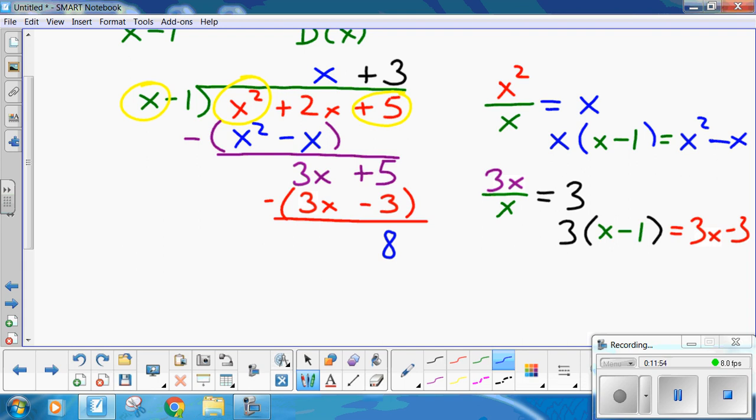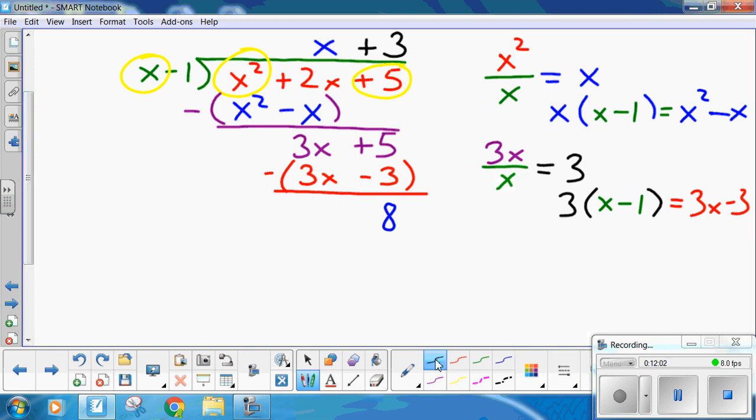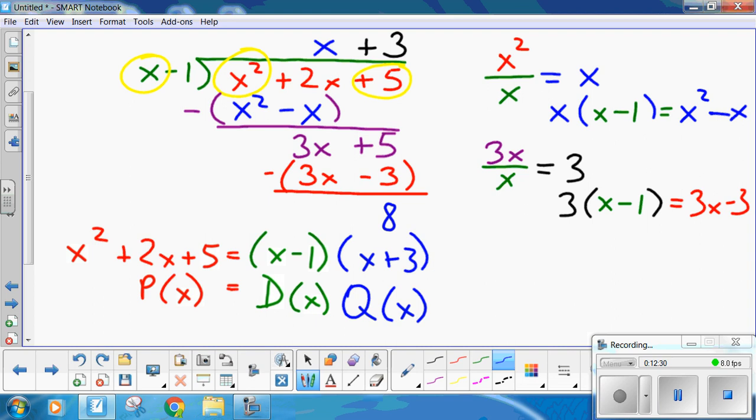So, let's see if I can put this together nicely. My original term, x squared plus 2x plus 5, my dividend, or p of x, equals my divisor times my quotient, my answer, which is x plus 3, plus my remainder. And if you don't believe me, multiply it out. x squared minus x plus 2x minus 3. Yes, it works. That's a division statement. And that's using long division to divide a polynomial by a binomial.